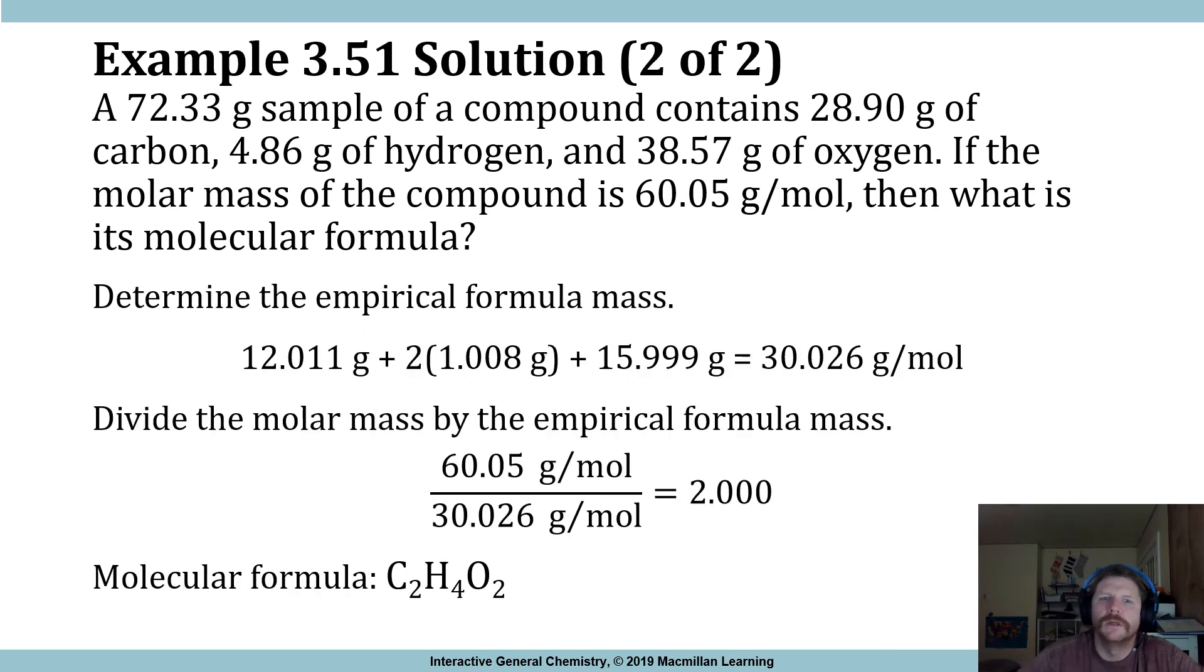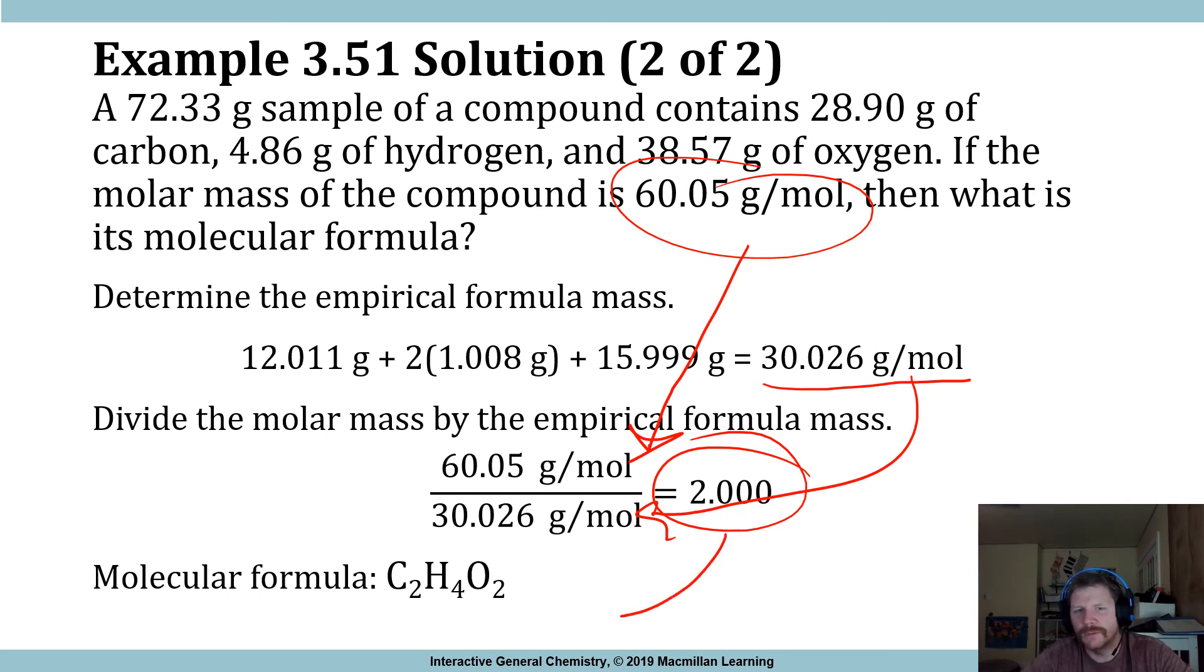The next part of this process is to determine what's the empirical formula mass of that substance. Well, it happens to be 30.026 grams per mole. You take the molar mass, divide it by our empirical formula mass, and lo and behold, that gives us some multiplying factor. That multiplying factor is applied to each of the subscripts, which our subscripts were 1, 2, 1. 2 times 1 is 2. 2 times 2 is 4. 2 times 1 is 2.